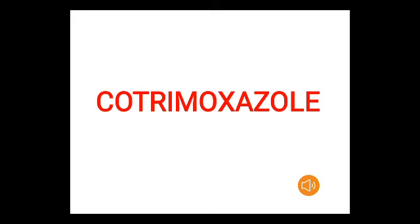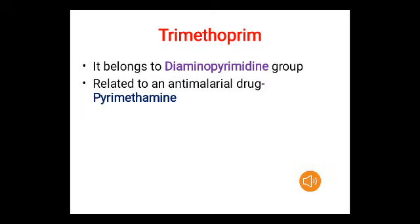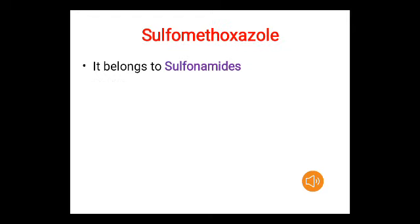Cotrimoxazole is a fixed-dose combination antibiotic consisting of two drugs: trimethoprim and sulfamethoxazole. Trimethoprim belongs to a group known as diaminopyrimidines, related to the antimalarial drug pyrimethamine. Sulfamethoxazole belongs to the sulfonamides.